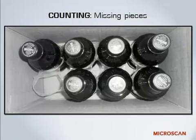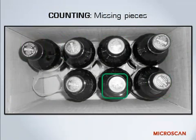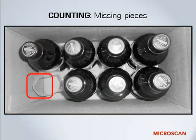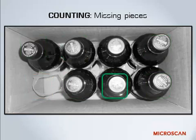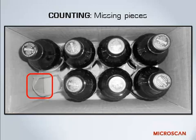Another counting function is absence/presence — is it there or not? Here we have an eight-pack of sodas, and you can see that one of the sodas is missing. With machine vision, that packaging can be checked to make sure an incomplete pack doesn't make it to the grocery store shelf. We've slowed the process down so you can see it, but machine vision systems can operate much faster.